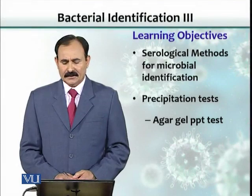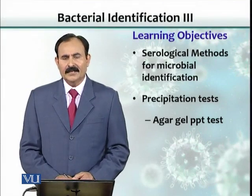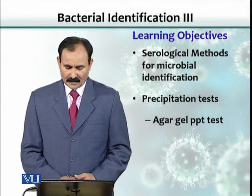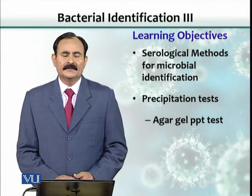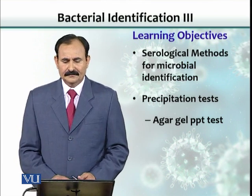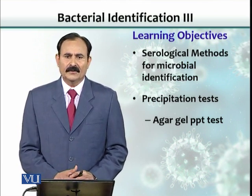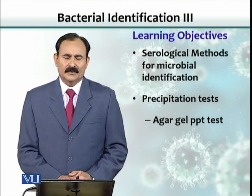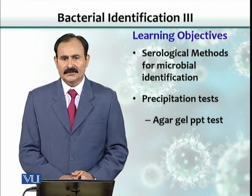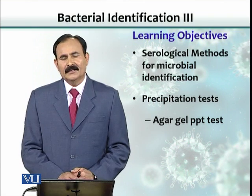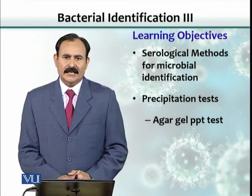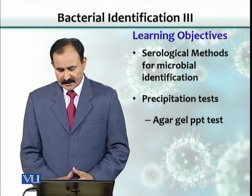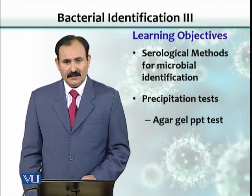Learning objectives include serological methods for bacterial or microbial identification. As in the previous lecture we saw that serum or antibodies would be used for agglutination, which is a serological method or serological interaction. Similarly, there is another serological interaction called the precipitation test.